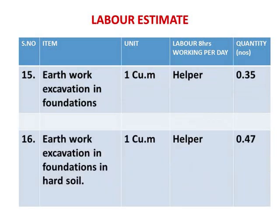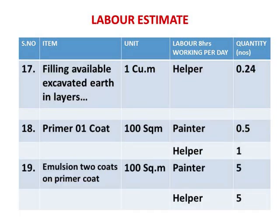For earthwork excavation, the first item is on ordinary soils, and for hard soil there is a small variation in labor constants. The other item is filling of excavated earth in layers in foundations. For painting, the first item is primer one coat, with coefficients given for labor outturn, and the next item is emulsion two coats on primer coat — one painter with helper is capable of covering about 20 square meters.